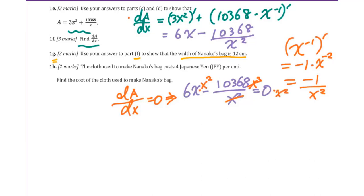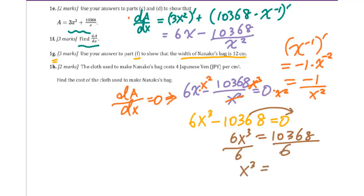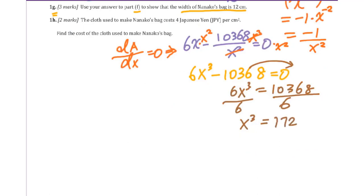So we have 6x cubed minus 10368 equal to 0. Adding this constant to both sides, you will get this. Then you divide it by 6 first. X cubed equals 1728. Then we do the cubic root both sides. You will get x equals 12. Look at 1h.